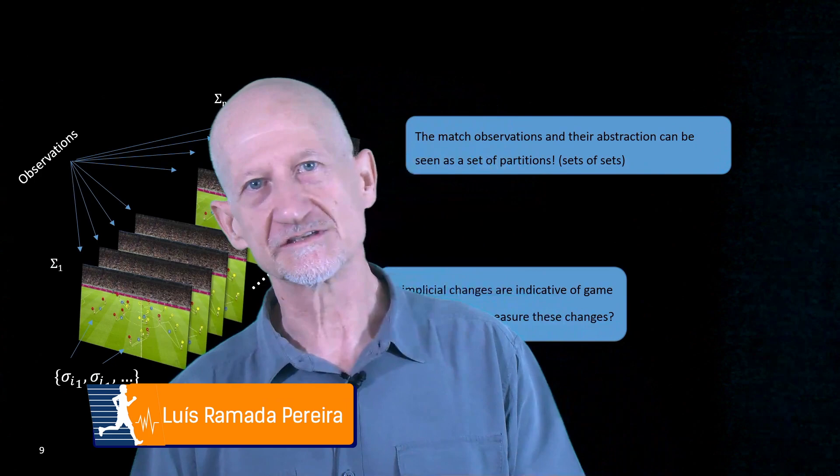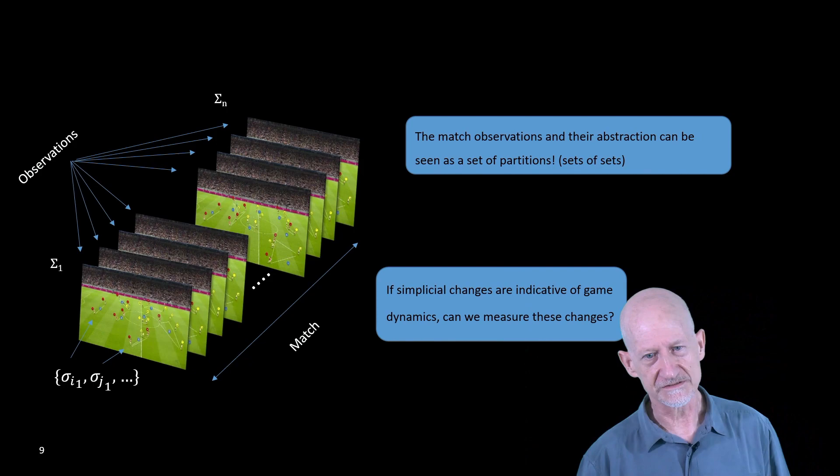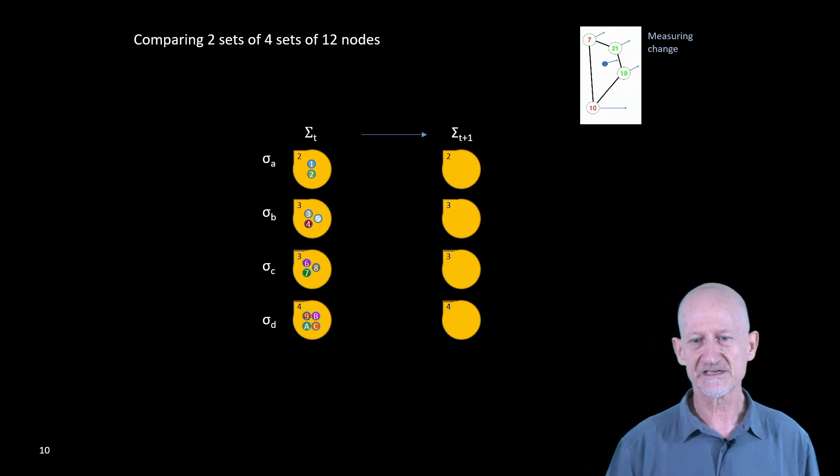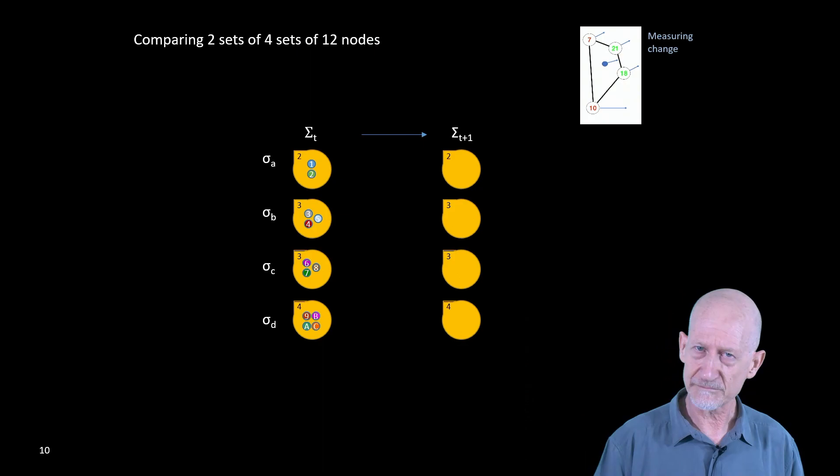One question we can ask ourselves is if it is possible to measure the amount of change the network endures as it evolves in time. Indeed we can. Using techniques from information theory, we can compute these changes. There are several methods. We selected the variation of information which measures the information distance between partitions of a network, which is basically what our observations are.